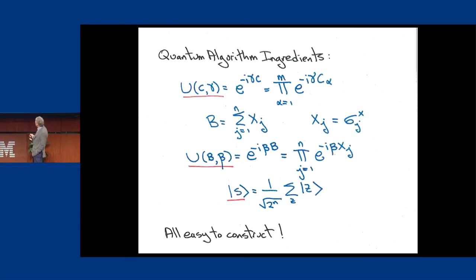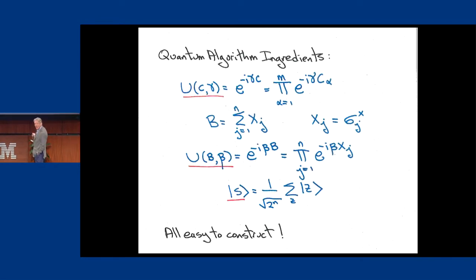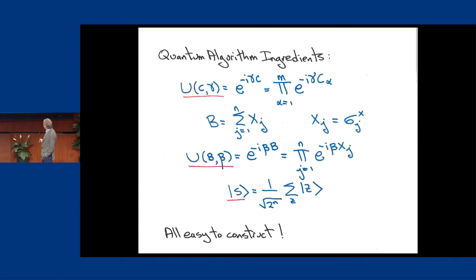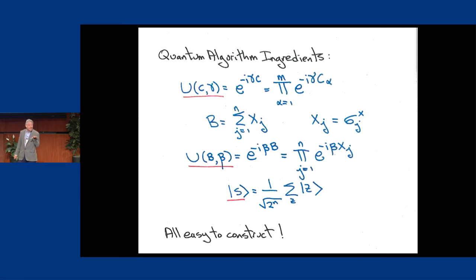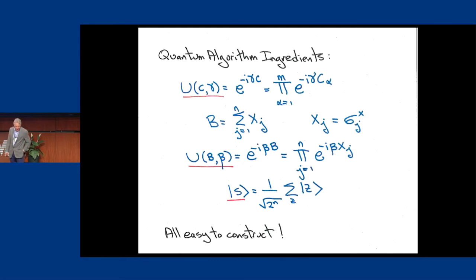I'd like to consider another operator B, which is the sum of the sigma Xs, and then U of B beta — e to the minus i beta B. This rotates all the spins around the X direction by the angle beta. Since B is made of commuting operators, this can be written as a product, and again this is a simple one-qubit operation. I'm trying to give you the ingredients of an algorithm which is implementable on a near-term quantum computer. I have a starting state which is the uniform superposition of all inputs — the eigenstate of this operator with the highest eigenvalue. I lined up the spins in the X direction.